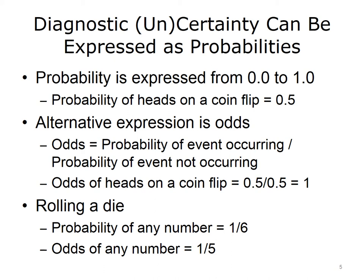When we talk about probabilities, we talk about them on a scale from 0 to 1, which corresponds to the scale of 0% to 100%. For example, when we flip a coin, the probability of getting heads is 0.5, or 50%. The same is true for the probability of getting tails if it's a fair coin. An alternative expression of probabilities is to talk about the odds — the probability of an event occurring versus the probability of an event not occurring, or the ratio. The odds of getting heads on a coin flip is 1 to 1. When we roll a single die with six possibilities, the probability of getting any number is 1/6, and the odds of getting any one number are 1 to 5.